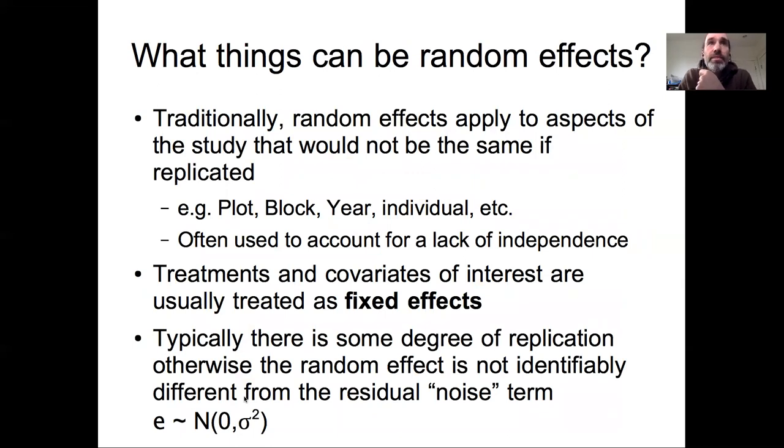What sort of things can be random effects? This is actually really important. Traditionally random effects are used to apply to aspects of a study that would not be the same if the study was replicated. If you did the study again you might tag different individuals, or you would do the study in different years, or the exact locations of your plots or blocks would be different if you replicated the study. Random effects are very much your different scales of measurement units within a given study, and we're often using these random effects to account for the lack of independence within those scales as well as to partition out those variabilities, in essence trying to account for the unexplained variability in that scale that's not explained by our process models.